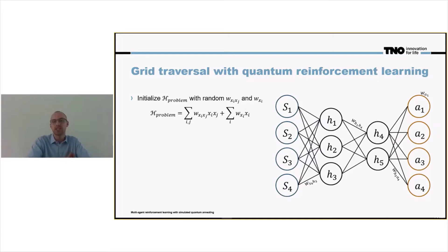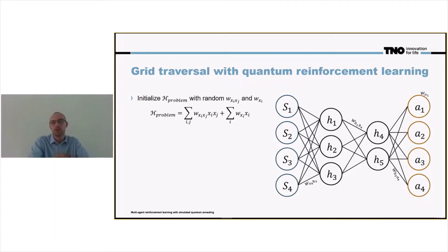What is important to notice is that the W·X_i term can be set to zero, because the preference of a node has no impact on the eventual result. It is purely the links between all the nodes that will determine the optimal policy.